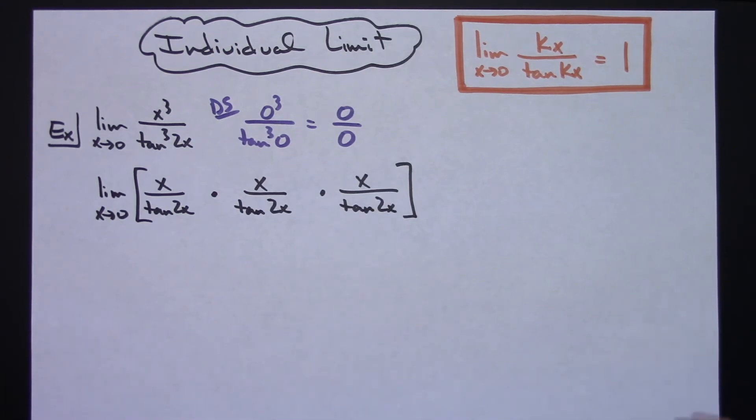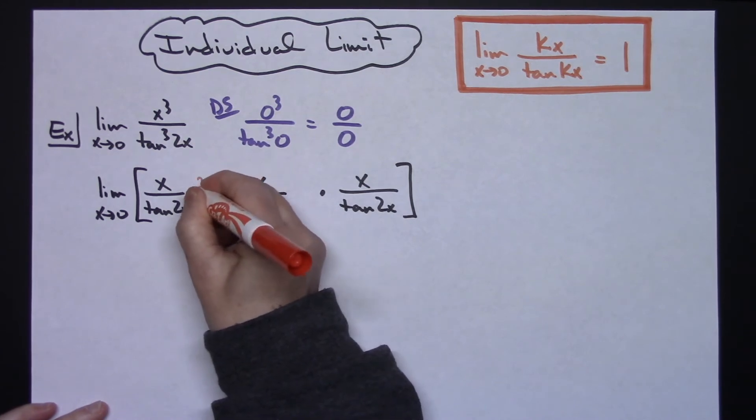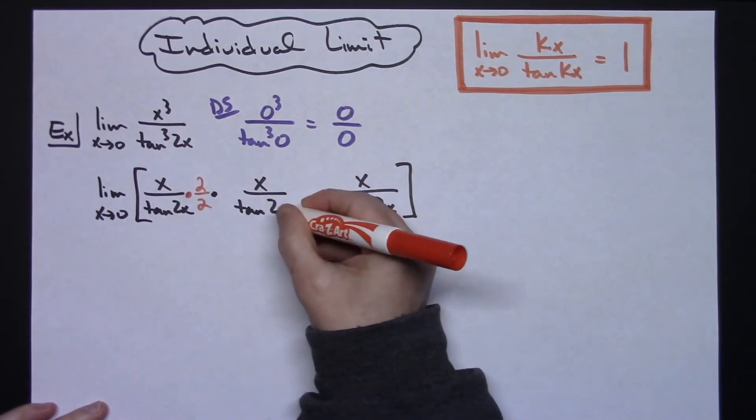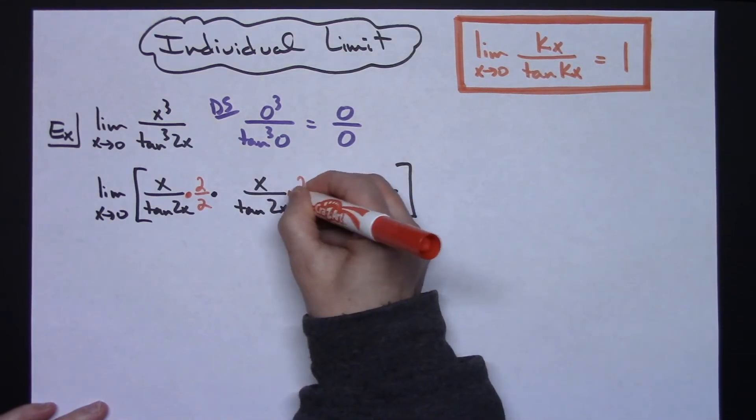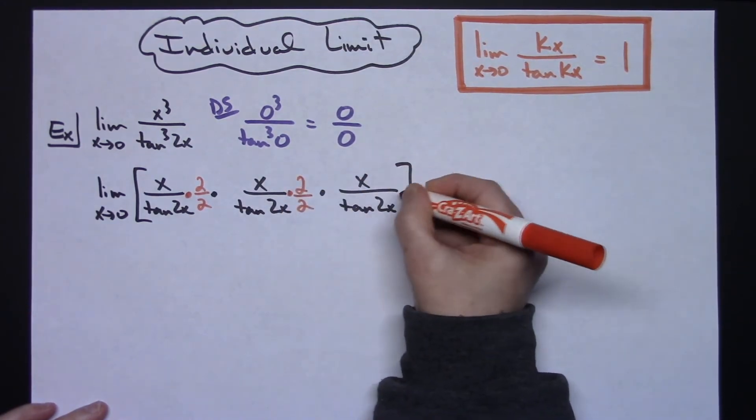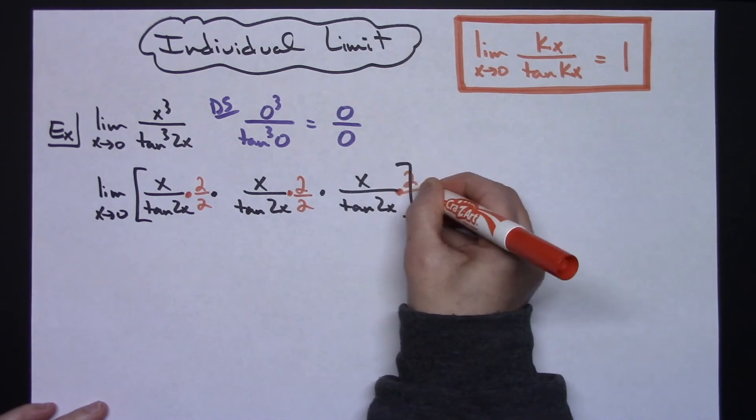So we can multiply by a form of 1 and it's not going to change my equation. So since I have a 2 down here and I want a 2 in the top, I'm going to choose to multiply this fraction by 2 over 2. Same thing with this one, and same thing on this one. I'm going to choose to multiply by 2 over 2.